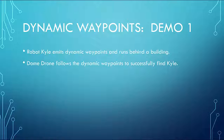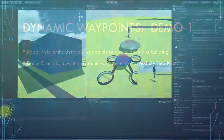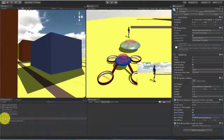Robot Kyle, under user control, is going to run behind a building, emitting Dynamic Waypoints as he goes. The Dome Drone will then use that path as a clue to successfully find Robot Kyle.